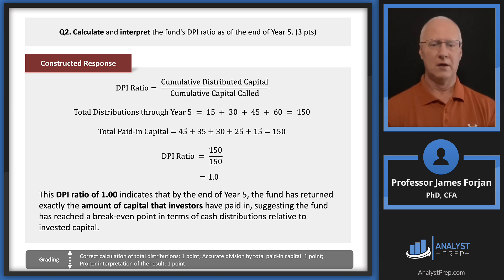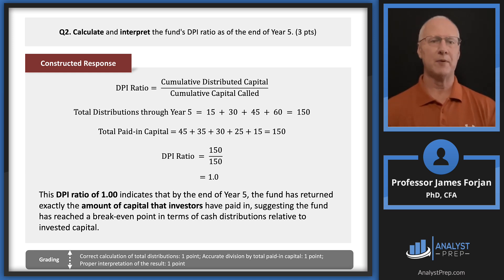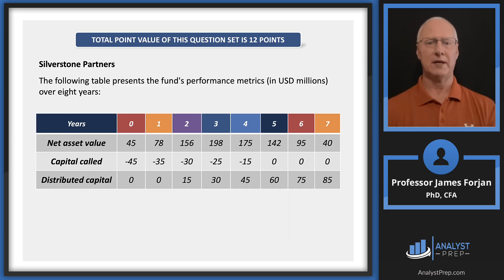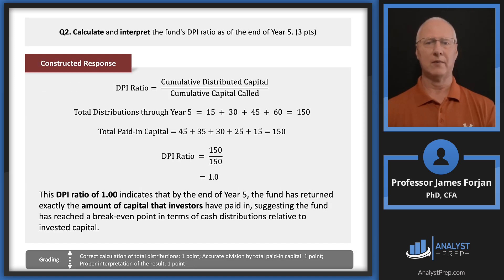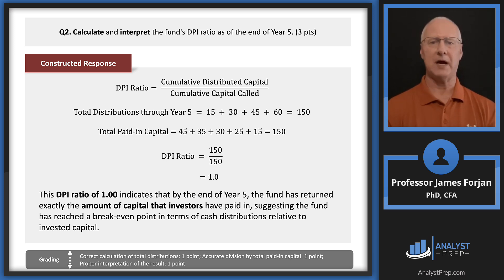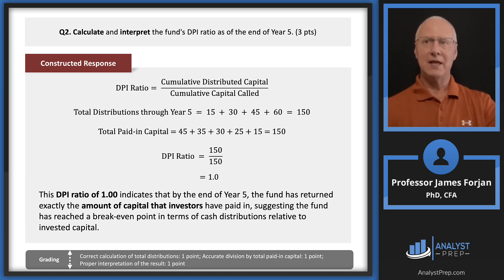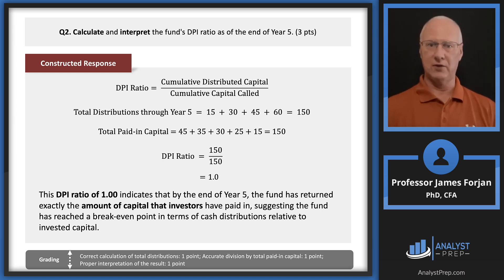Let's go ahead and compute the DPI ratio. There's the cumulative distributed capital — that's the D in DPI. Total distributions through year five: going back to that table, distributed capital is 15, 30, 45, and 60. So that's 150 divided by the paid-in capital of 150, giving us a DPI ratio of one. This indicates that at the end of five years, we've returned the exact amount. One of the cool things about this learning module is that right before this section, there are four or five pages where the Institute reminds us how to calculate net present value, internal rate of return, and return on investment.